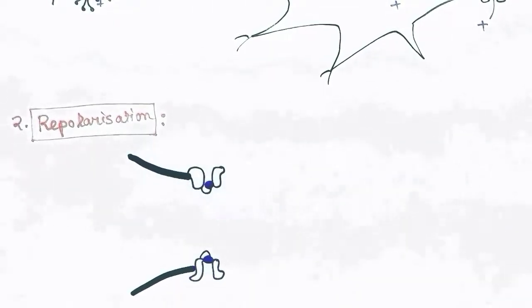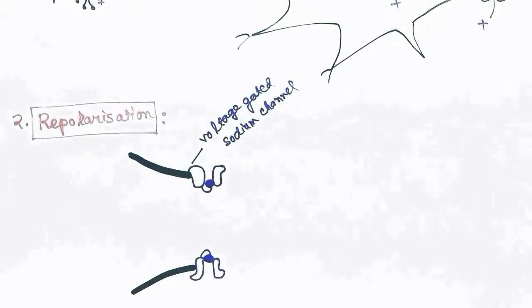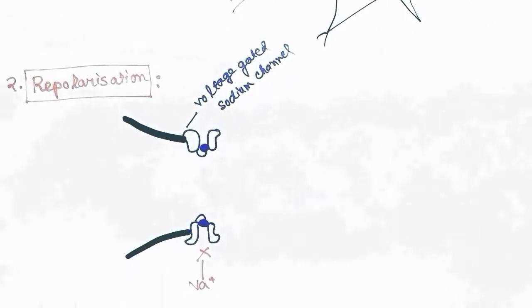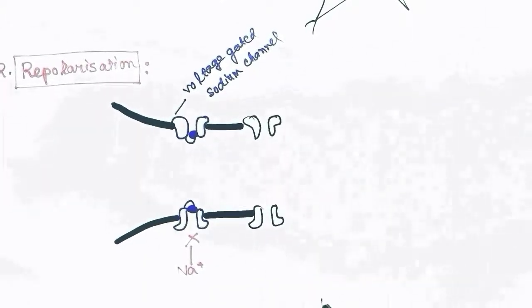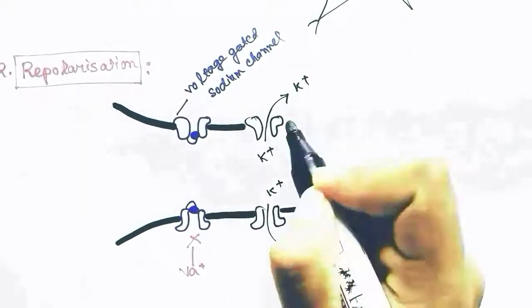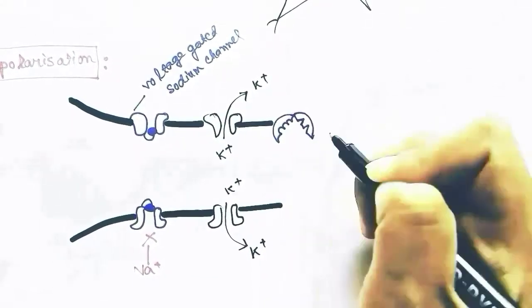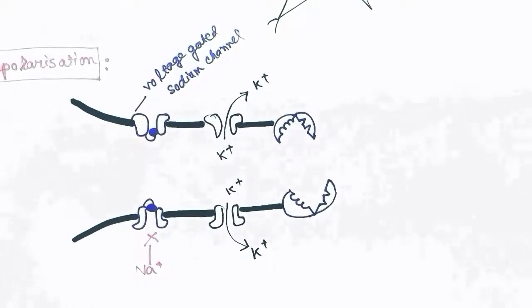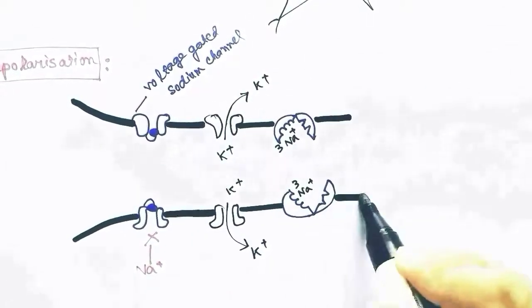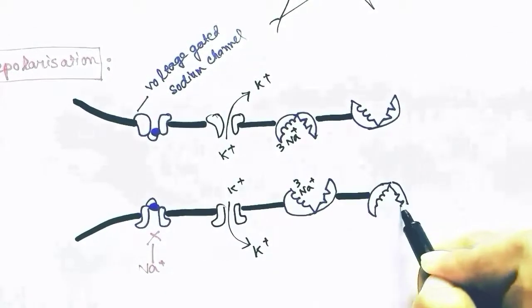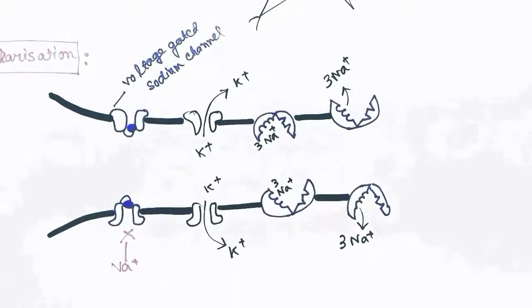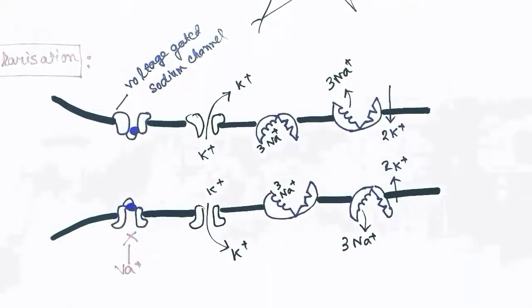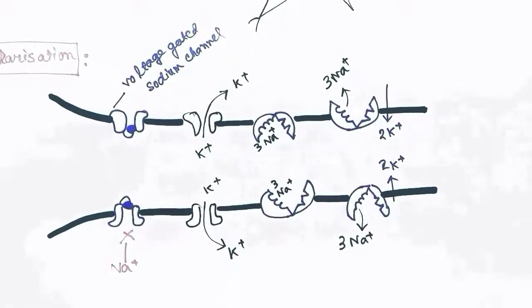Next, repolarization occurs — the cell becomes polarized again, negative inside and positive outside. The voltage-gated sodium channels close, so no sodium inflow occurs. The potassium channels open, and since potassium is concentrated inside the cell it moves outside according to the concentration gradient. The mechanically gated sodium-potassium pump also pumps 3 sodium ions from inside to outside in exchange for 2 potassium, so more positive charge goes outside and less positive charge remains inside.